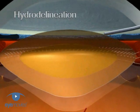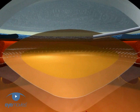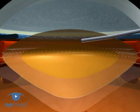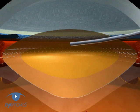To begin the hydro delineation, push the cannula into the central nucleus via the main incision. You should aim it as much posterior as peripheral.